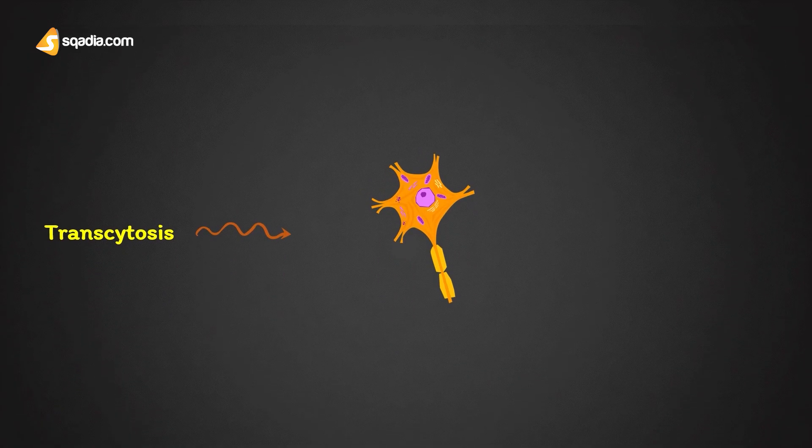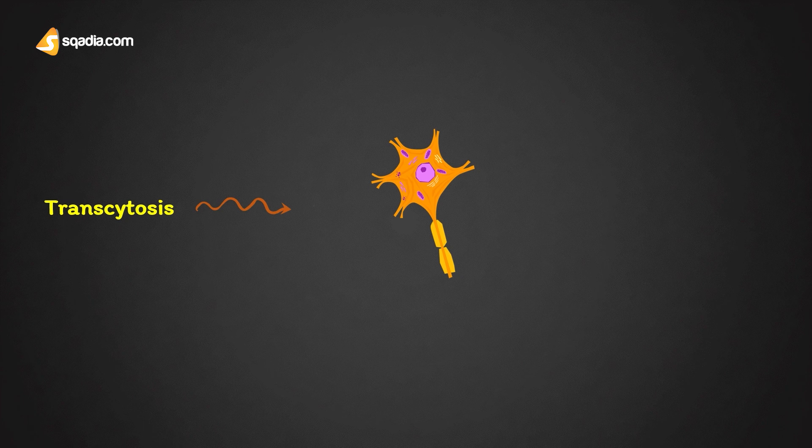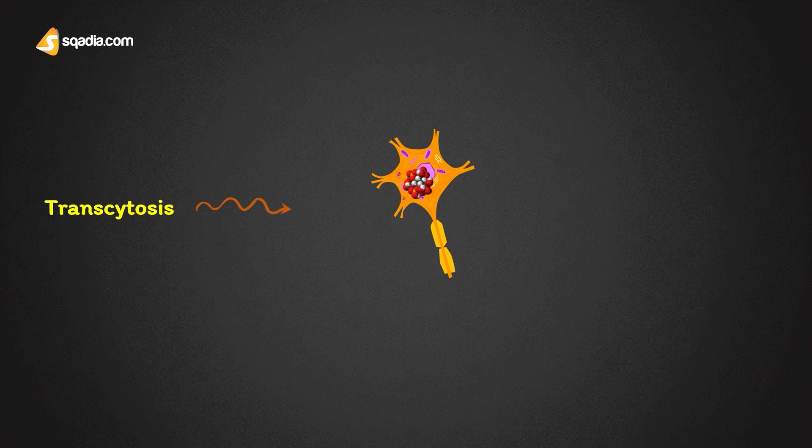Transcytosis is a transport mechanism in which an extracellular macromolecule enters through one side of a cell, migrates across the cytoplasm of the cell, and exits through the other side.